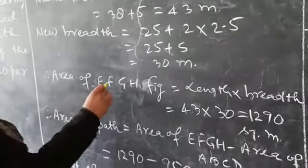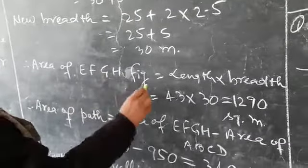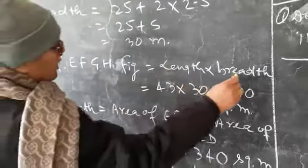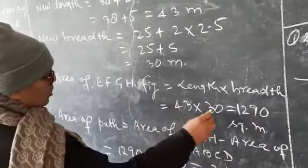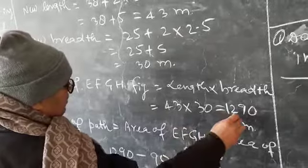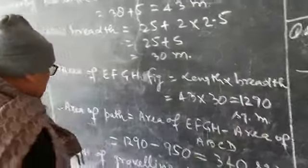Therefore, area of EFGH figure is equal to length into breadth. Therefore, it will be equal to 43 into 30, that will be 1290 square meter.